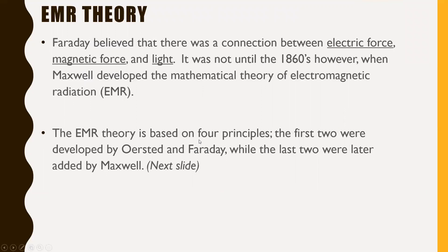From here on, this is what's in the booklet. The very beginning of the part one EMR booklet covers EMR theory. Faraday believed there was a connection between electric force, magnetic force, and light. It was not until the 1860s, however, when Maxwell developed the mathematical theory of electromagnetic radiation. The EMR theory is based on four principles: the first two were developed by Orsted and Faraday, while the last two were later added by Maxwell.